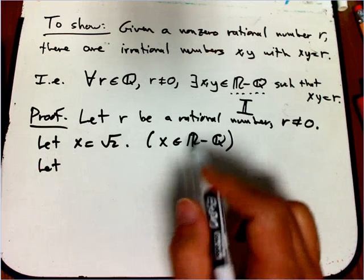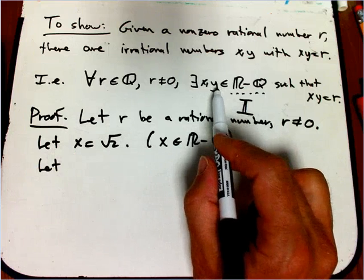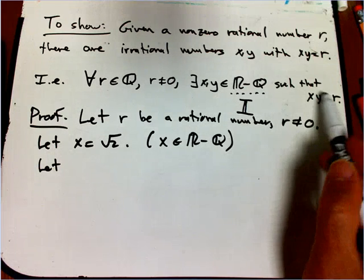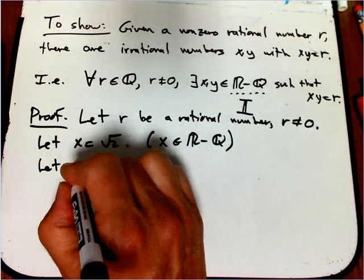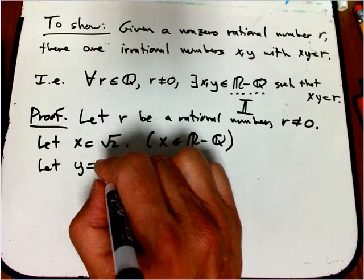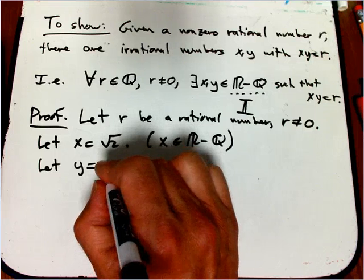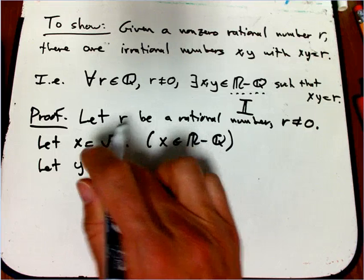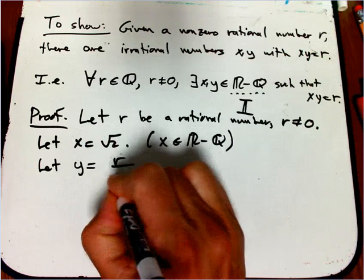And now we're pretty much forced to define Y in a certain way. We know that XY is supposed to end up being R, so we just let Y be R divided by root two.